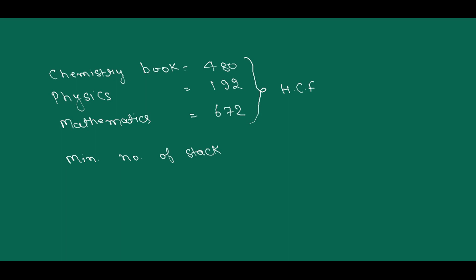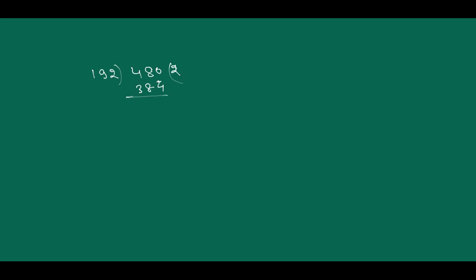480, 192. 192 divided by 480. There are so many ways to find HCF. You can find the prime factorization method also. 192 two times 384, that means 96. 96, 192, 96 two times 192. Here from 192 and 480 you got 96 as a time factorization.